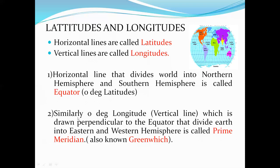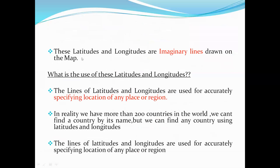Zero degree longitude is a vertical line drawn perpendicular to the equator that divides the earth into eastern and western hemisphere. It is called the prime meridian, also called as Greenwich. The lines of latitudes and longitudes are imaginary lines drawn on the map, used for accurately specifying the location of any place or region.